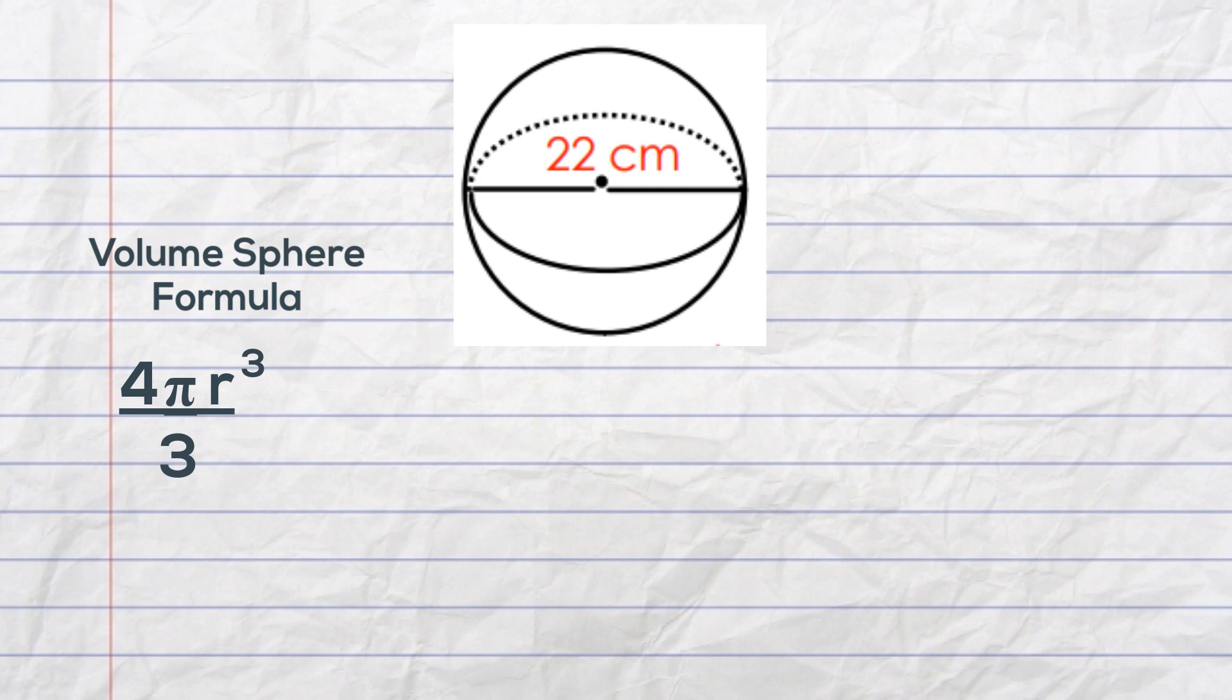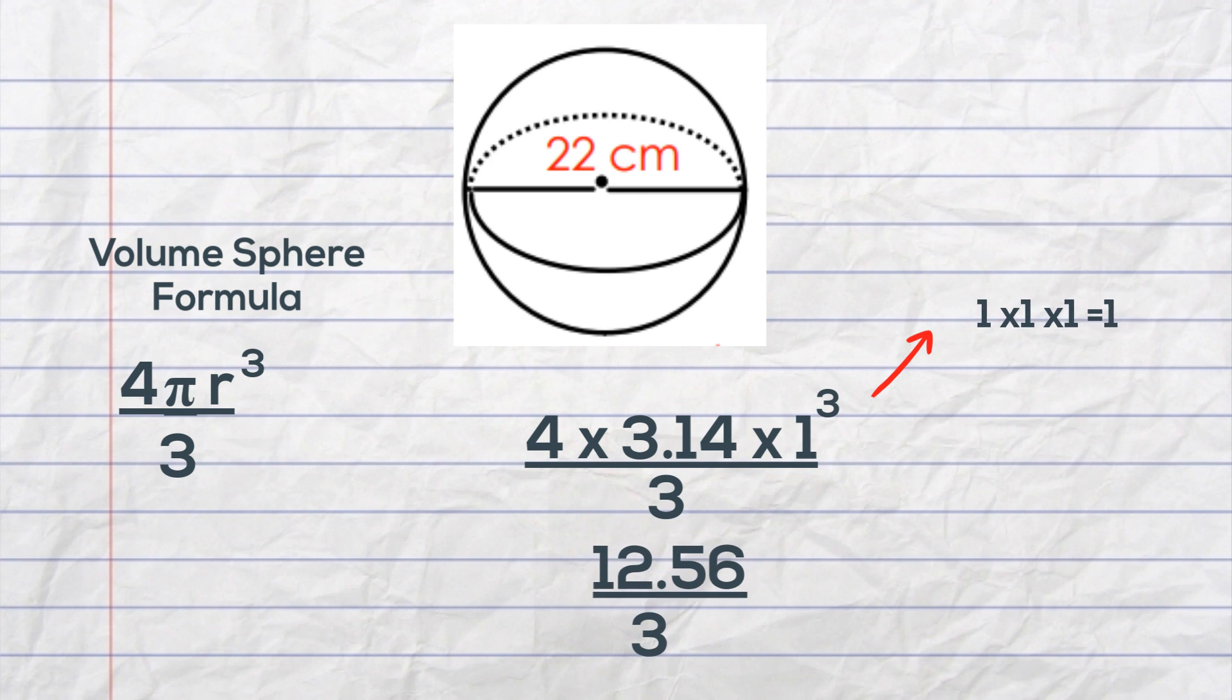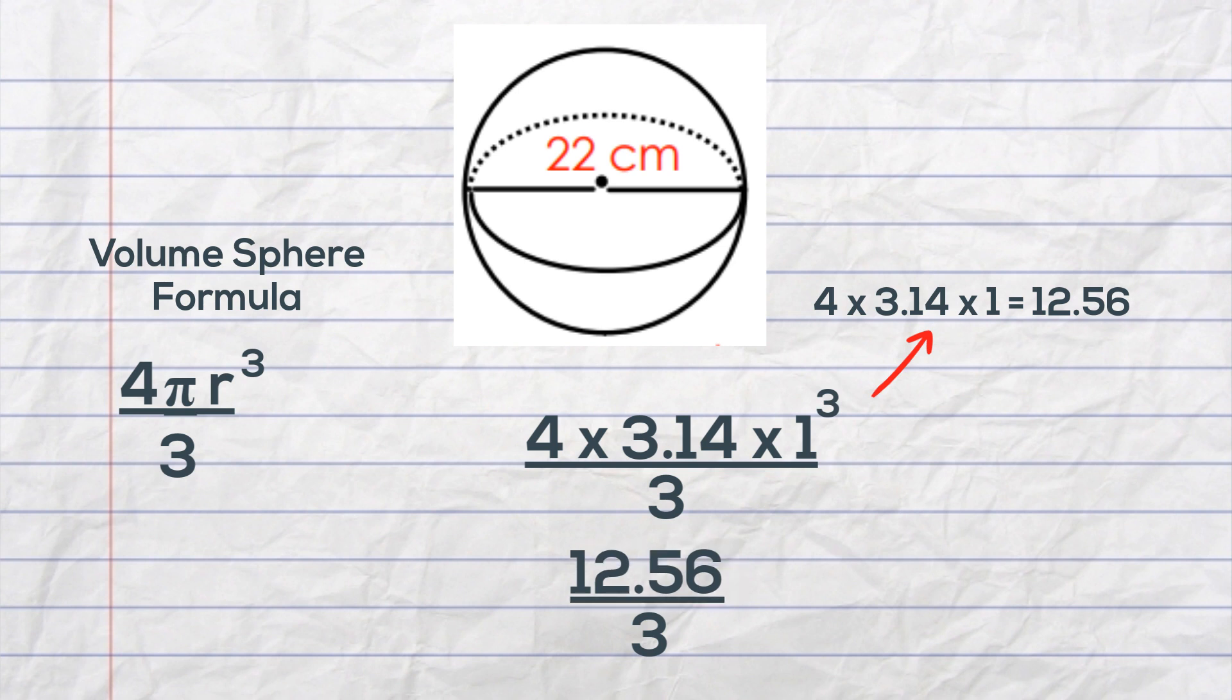So it will be four times 3.14 times one cubed divided by three. And when I multiply this I get 12.56 divided by three. And then I divide 12.56 by three and that gives me 4.2.